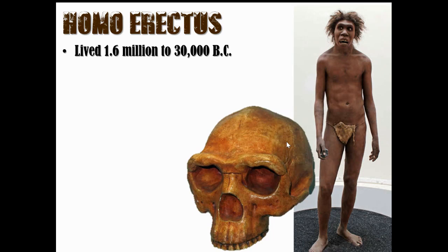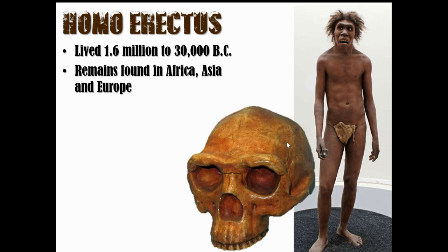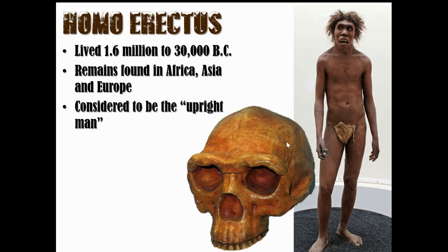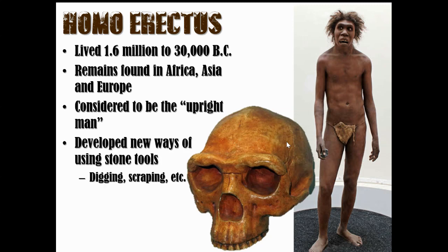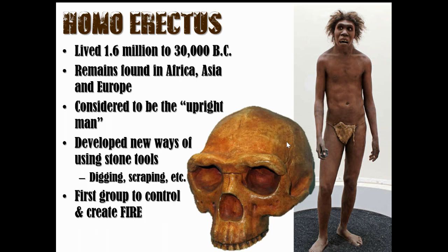Next we have Homo erectus, who lived from 1.6 million to 30,000 BC. Remains were found in Africa, Asia, and Europe — these guys traveled around. This is considered the 'upright man,' as you can tell by his posture. They created new ways of using stone tools — not just cutting meat, but digging and scraping. Most importantly, this is the group that learned to control and create fire. Before this, fire only came from lightning striking trees.